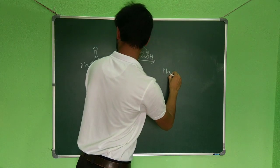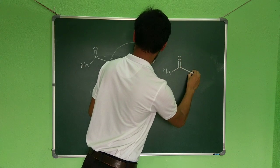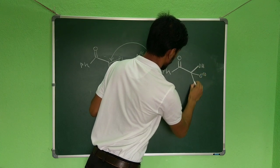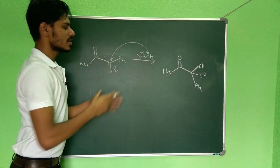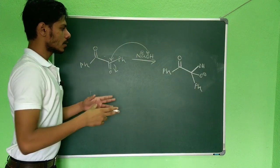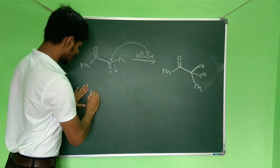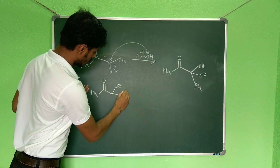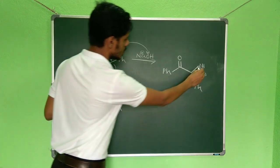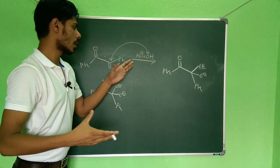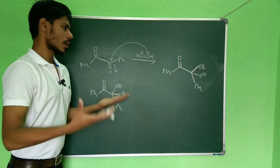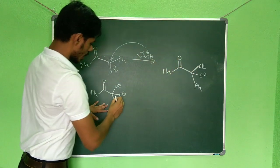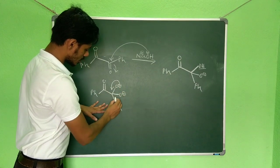...you get an intermediate with Ph, C, O⁻, OH, and another phenyl group. If the NaOH concentration is very high, you can get a dianion where both oxygens become O⁻. If the NaOH concentration is not that high, you get the monoanion species with an adjacent OH group.